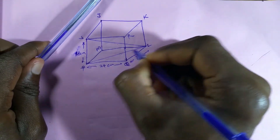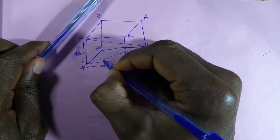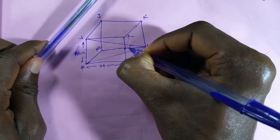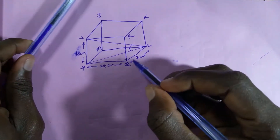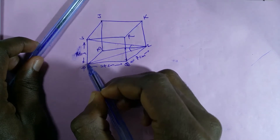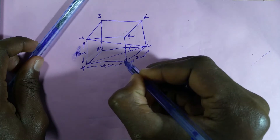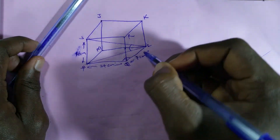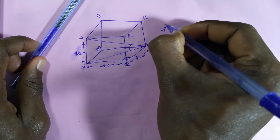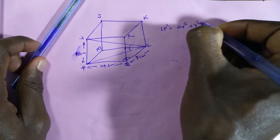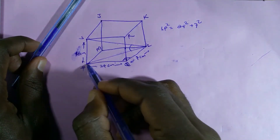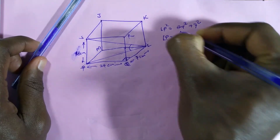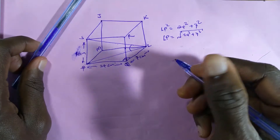Since diagonal LP lies on plane PQLM, the angle between line SL and the plane equals the angle between line SL and line LP. LP is the hypotenuse of the right-angled triangle PQL. So LP squared equals 24 squared plus 7 squared, because PQ is perpendicular to QL. Therefore LP equals the square root of 24 squared plus 7 squared.